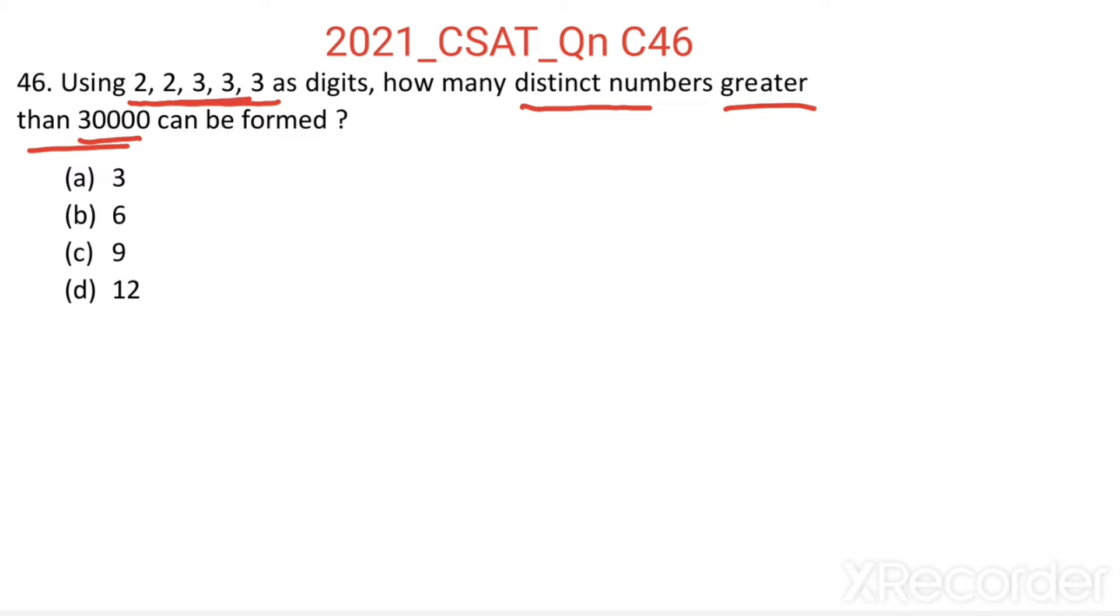To get a number greater than 30000, the first digit should be 3. Then 4 places and 4 digits are remaining: two 3s and two 2s.